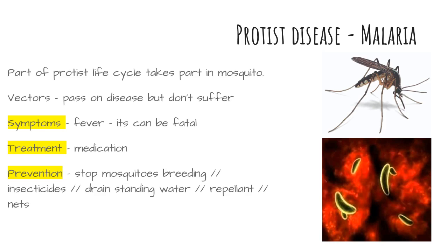They pick up the malarial protist when they feed on an infected animal. Every time the mosquito feeds on another animal, it infects it by inserting the protist into the animal's blood vessels.